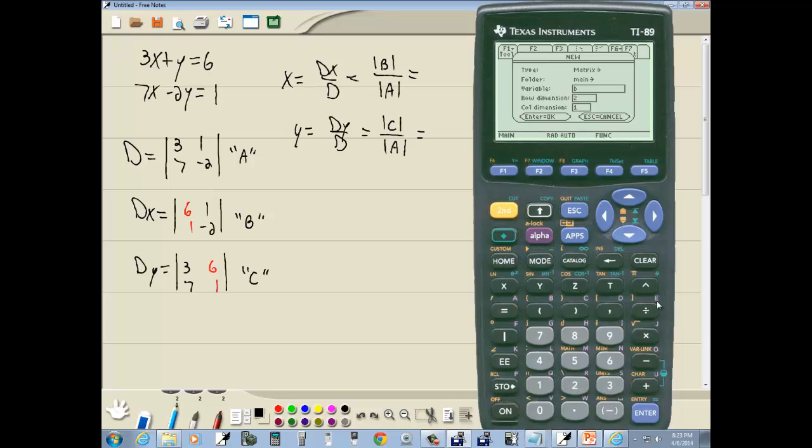Then A down arrow and rows, 2 rows, and then still got alpha lock on so shut alpha lock off and put 2 in, down arrow, I'll put 2 here and I'll down arrow to save that and then I'll press enter. And this will be 6 enter, 1 enter, 1 enter, negative 2 enter. 6, 1, 1, negative 2.